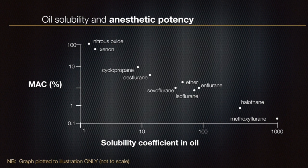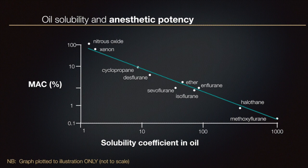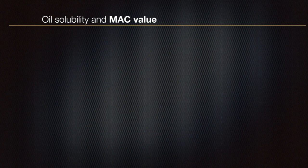Here the vertical axis of the graph is minimum alveolar concentration (MAC) in percentage; the horizontal axis shows the oil solubility coefficient on a logarithmic scale. Commonly discussed agents are plotted. The trend line shows that an anesthetic with a high oil solubility is effective at a low MAC value — in other words, an anesthetic with a high oil solubility is effective at a lower alveolar concentration and has a high potency. An alternative way of expressing this is to say that the MAC value for any anesthetic is related to the number of molecules dissolved in oil, and this applies to all volatile anesthetics.